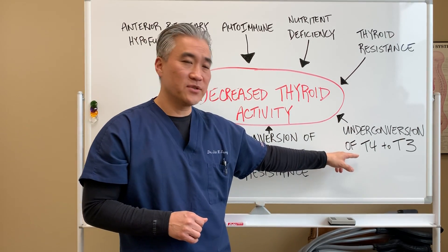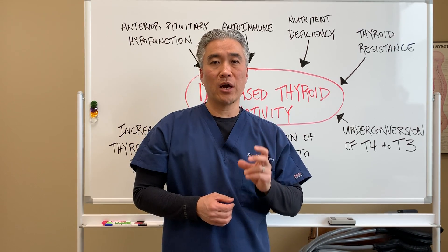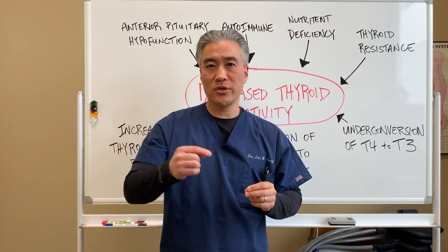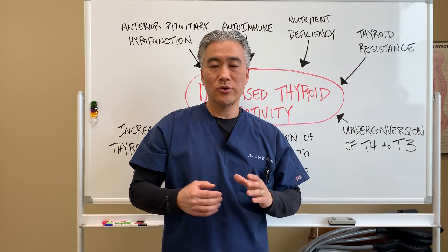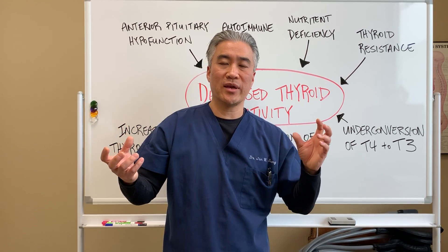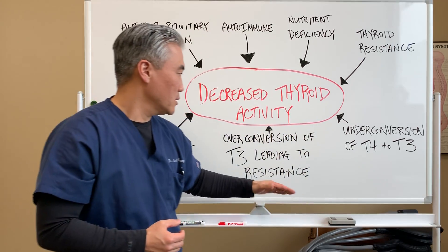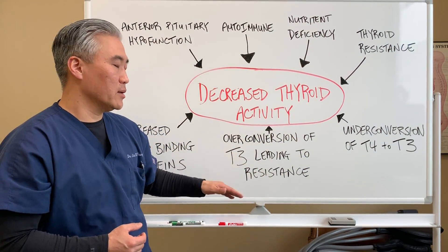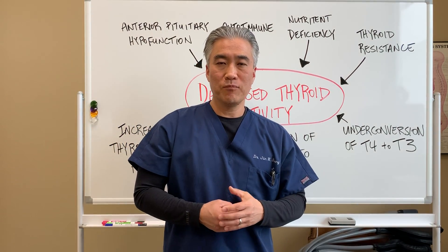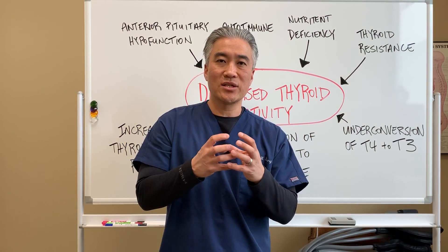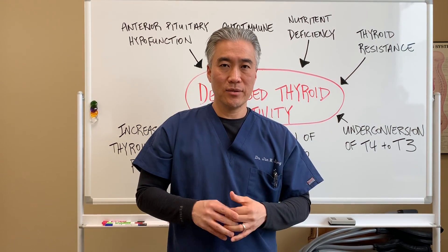Under-conversion of T4 to T3 means your inactive hormone produced by your thyroid gland is not being converted to the active form of T3. So there's an under-conversion, and utilization of active hormone is low. Over-conversion of T3 can also lead to resistance — much like insulin resistance, where cells are resistant to insulin for people who have diabetes, your thyroid becomes resistant to thyroid hormones.